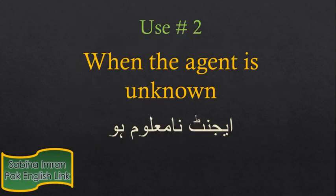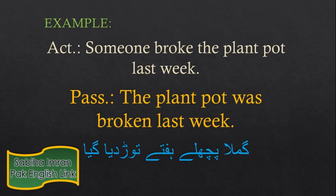Passive voice वहाँ भी इस्तेमाल करते हैं जब agent को आप नहीं जानते। For example, 'Someone broke the plant pot last week' — चूँके यहाँ agent unknown है, आप passive voice इस्तेमाल कर सकते हैं: 'The plant pot was broken last week' — गमला पिछले हफ्ते तोड़ दिया गया।